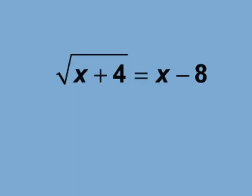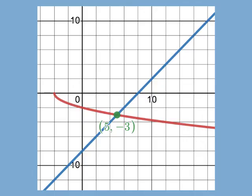Going back to the original equation, the square root term also has a negative root, as shown here. By convention, with square roots we use the positive root. But the graph of the negative root reveals the extraneous solution.